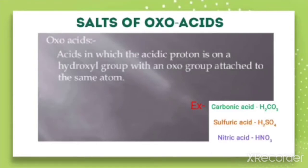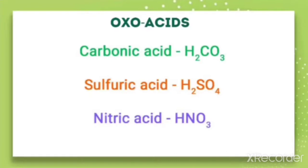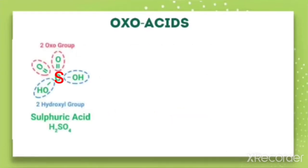Let us see why these acids are called oxoacids. We can make the structure for these so that the definition will be clear. In H₂SO₄ the central atom is sulphur, written in the center. Because it is H₂SO₄, there are two protons. These protons are with the hydroxyl group. The acidic proton — the proton which can be donated by the acid — is with the hydroxyl group.